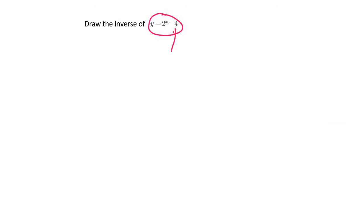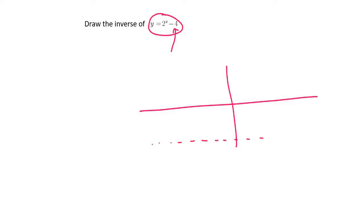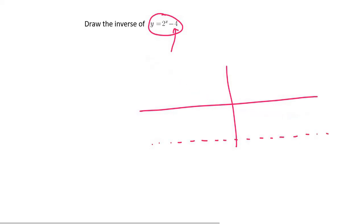This exponential graph has been moved down by 4. I'm just going to draw a rough sketch of what it would look like — a random exponential graph that has been moved down. You would have your dotted line, which represents your asymptote, and then it could go downwards like this, or it could go upwards. We will find out what it looks like by finding the x-intercepts and the y-intercept.